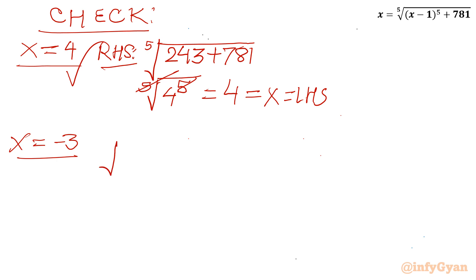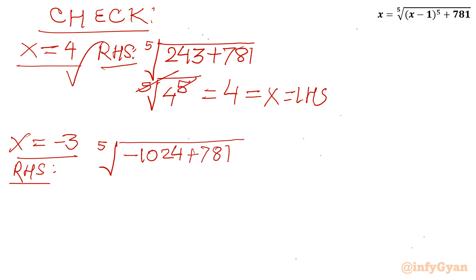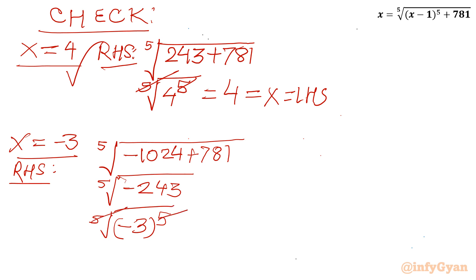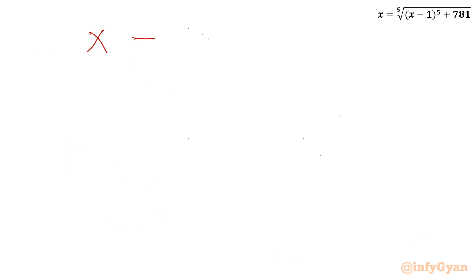Now checking x equal to negative 3: fifth root of (negative 3 minus 1) power 5 plus 781, which is fifth root of (negative 4) power 5 plus 781. (Negative 4) power 5 is minus 1024, plus 781 gives minus 243. The fifth root of minus 243 is fifth root of (minus 3) power 5, and the fifth root and power 5 cancel, giving minus 3, which equals x. Hence this is also verified. So x equals 4 and x equals negative 3.